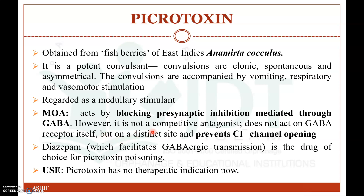Picrotoxin is not a competitive antagonist; it does not act on the GABA receptor itself but on a distinct site, and it also prevents chloride channel opening. Picrotoxin poisoning can be treated with diazepam, which facilitates GABAergic transmission, producing the opposite CNS depressant effect. Picrotoxin also has no therapeutic indication nowadays because it produces convulsions.